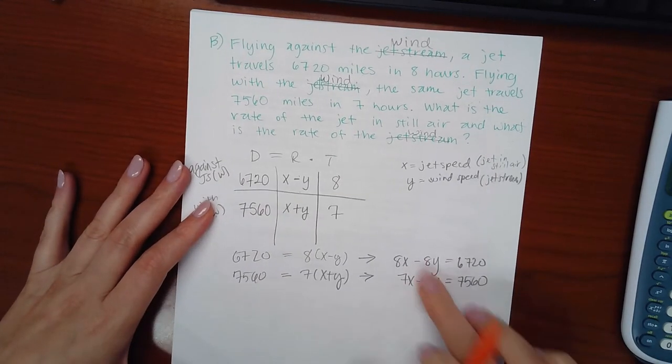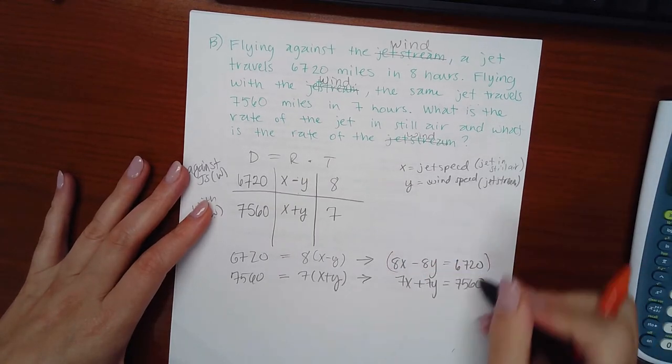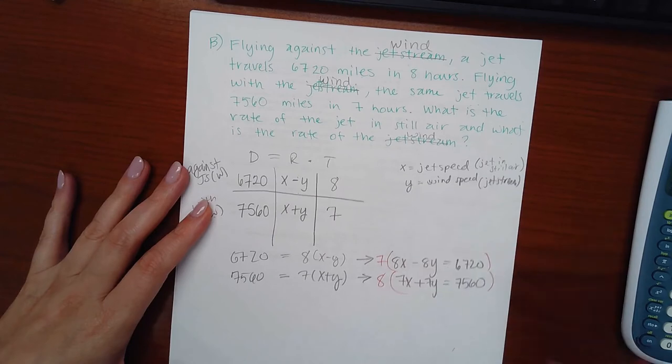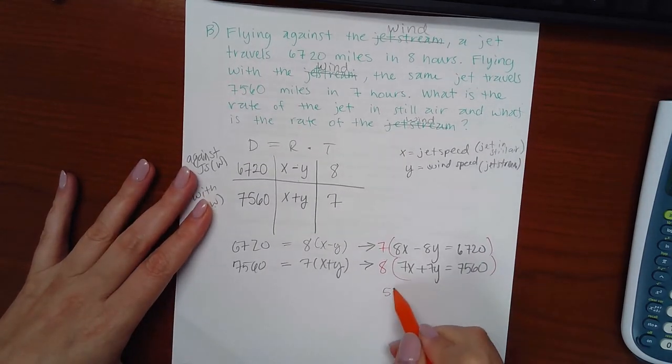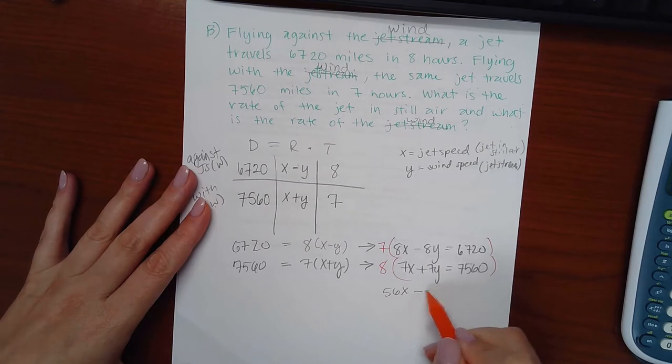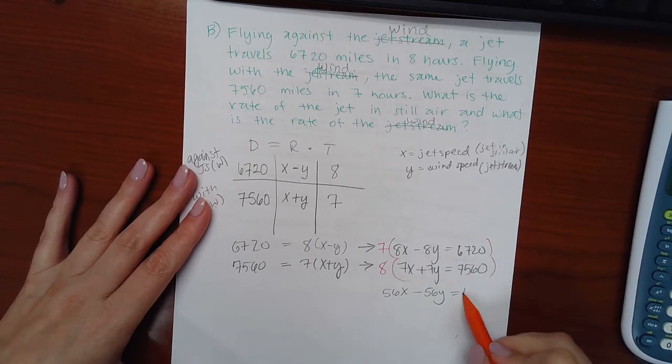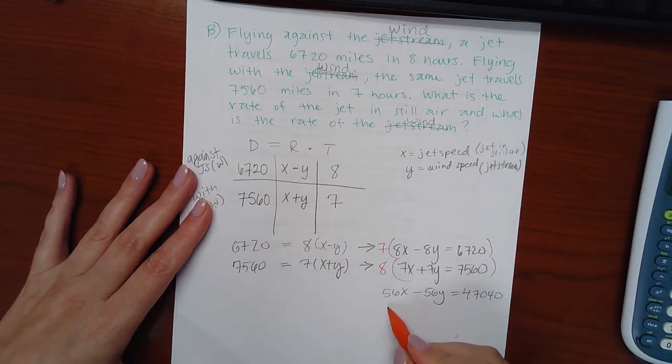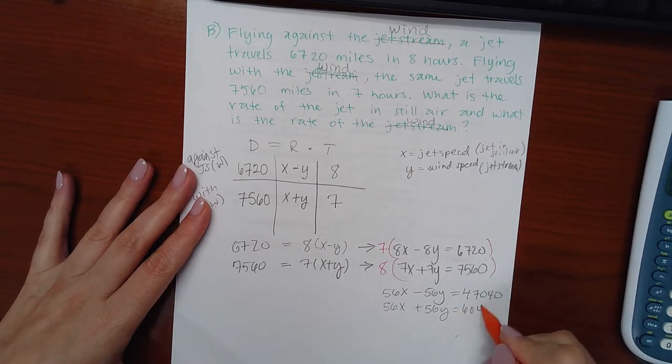These are already opposite signs, but I will have to multiply the top equation by seven and the bottom equation by eight so that they have the same number and they'll cancel. So I get 56X minus 56Y equal to this huge number. 56X plus 56Y equal to this huge number.